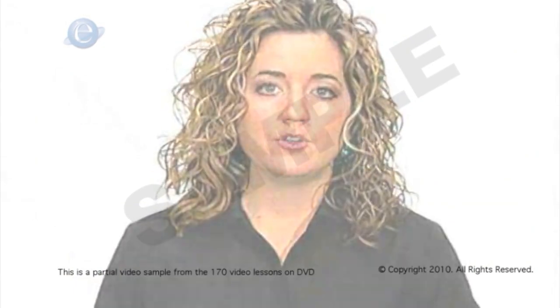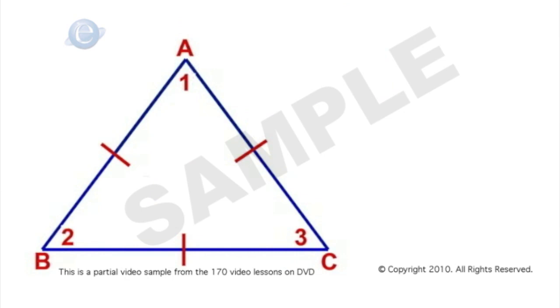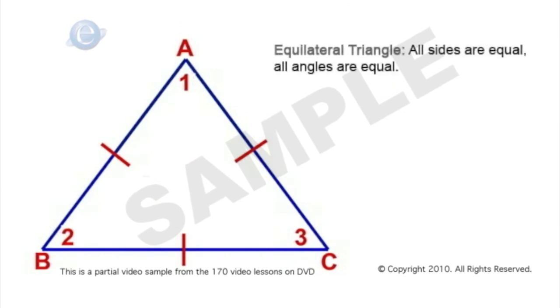Equilateral Triangle. An equilateral triangle is a special type of triangle where all three sides have equal lengths.